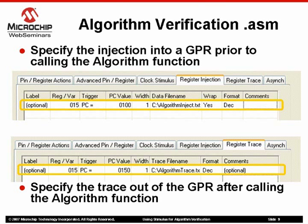Looking at the lower half, specify the trace of the output from the GPR after the algorithm. This can also be done by specifying the address of the register or using a global symbol name. For the trigger in this example we used an absolute PC value. Press the Apply button so that the defined synchronous stimulus is integrated into the simulator engine. There will be a confirmation message printed in the output window.